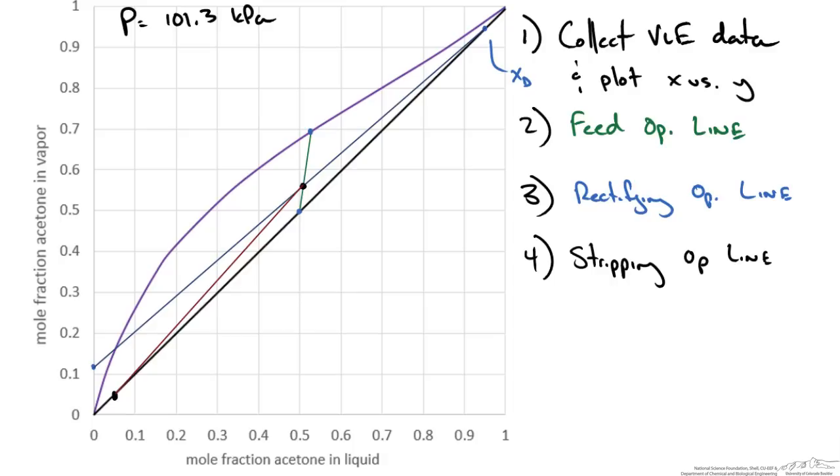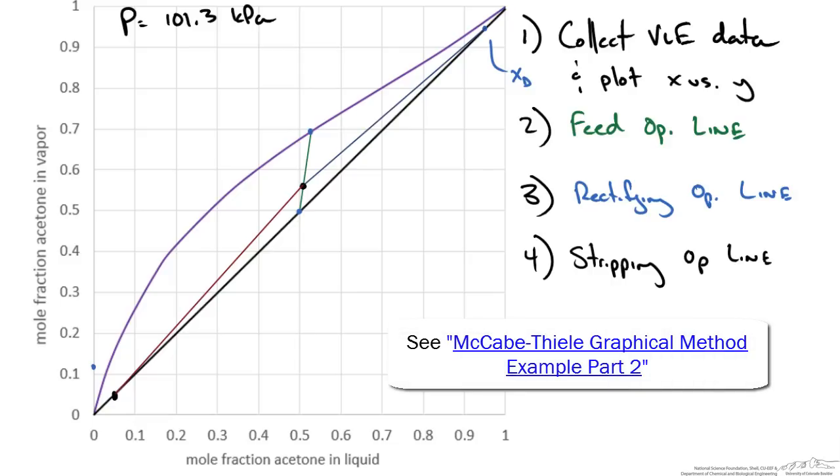I like cleaning up the plot. We don't need our rectifying line going all the way into our y-axis. We also don't need our feed line going past our intersection point. That leaves us with a cleaned up McCabe-Thiele diagram.